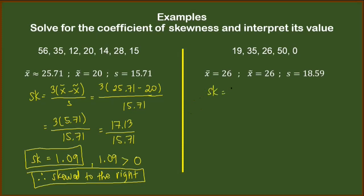Okay, so we will still use SK equals 3 times mean minus median over the standard deviation. So we have the mean of 26, median is also 26, and this is 18.59. Notice that 26 minus 26 will result to 0. The numerator when multiplied by 0 will become 0, and the answer to this fraction is also 0.